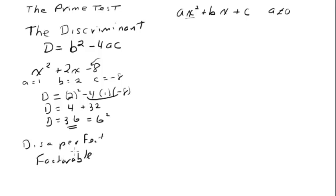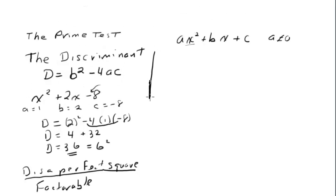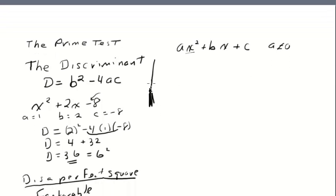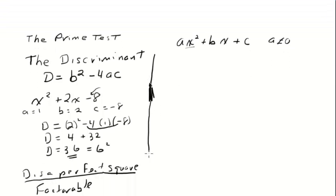And that's our test, that if the discriminant is a perfect square. Let's get the word square on there. Okay, now, let's take a couple examples where we don't have terms that are factorable.